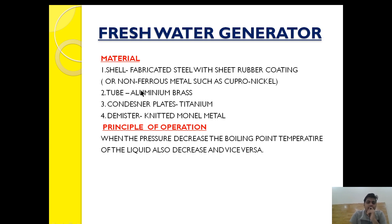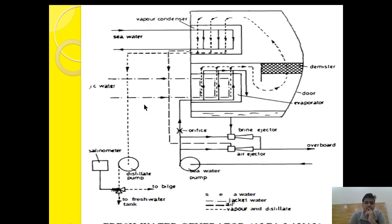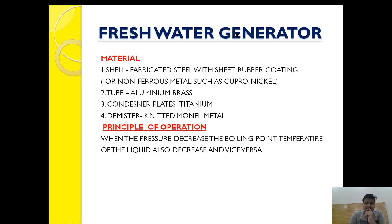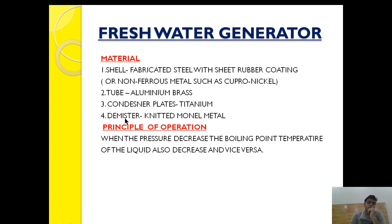The tubes used for heat exchange purpose are made up of admiralty brass. The condenser plate is made up of titanium — in some cases both the condenser plate tubes as well as the evaporator plate are made up of titanium. Demisters are made up of knitted vinyl metal.